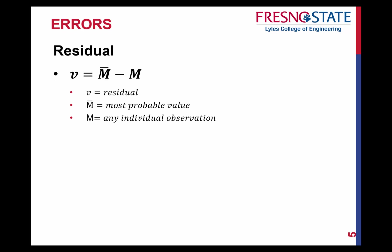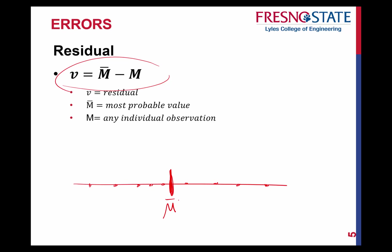Residual is taking your most probable value and then subtracting any individual observation. So if you had a line with all these different observations plotted, and you figure out where your mean is, the residual represents the distance away from the most probable value. The residual can be either positive or negative depending on whether the observation is greater or less than the most probable value.